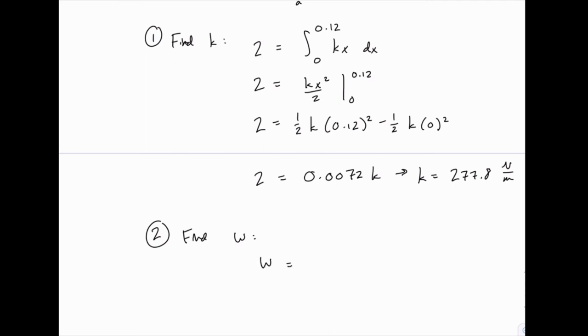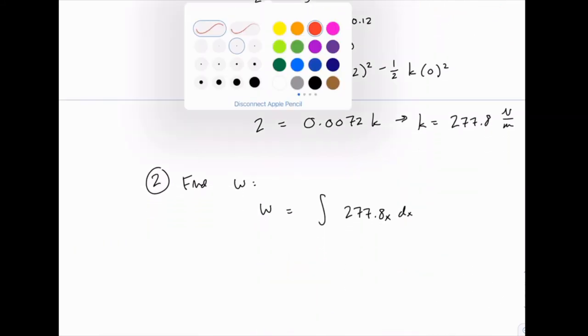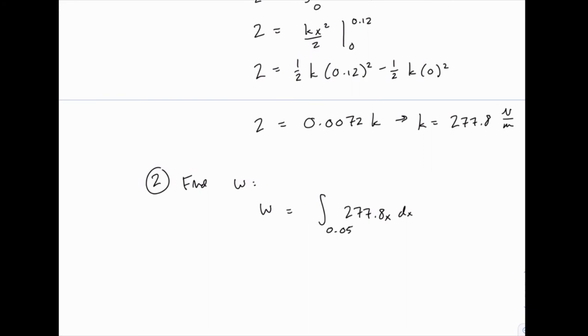So now we can work with the known stiffness and find the unknown work. We just need the other limits of integration for this question we're asked. Now we're looking to stretch it from 35 to 42 centimeters. The 35 is 5 centimeters beyond the natural length, and the 42 is 12 centimeters beyond the natural length. So that would be x equals 0.05 and 0.12. Again, remember we're converting the centimeter measurements into meters to keep everything in standard units.